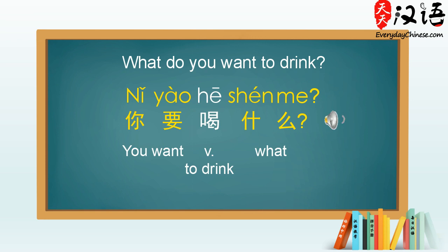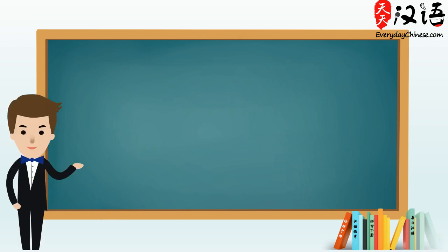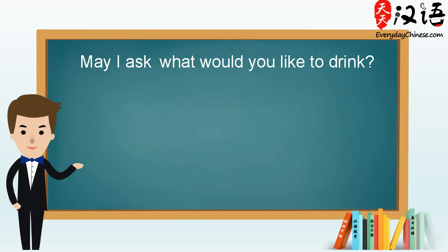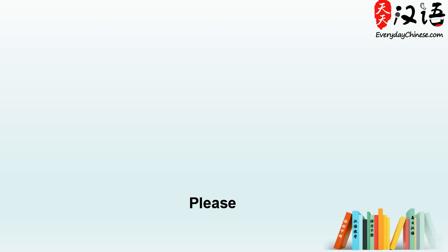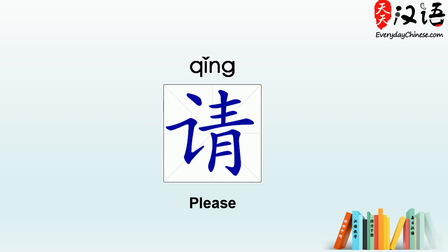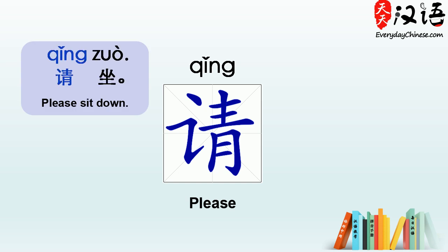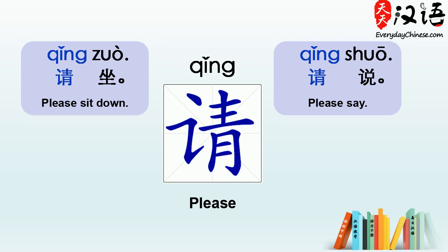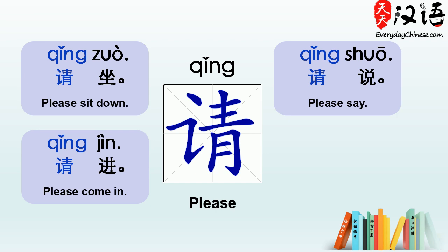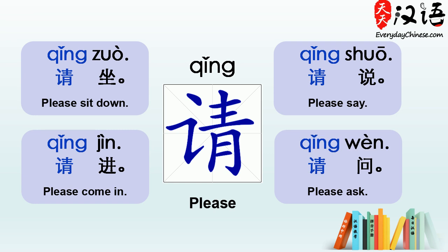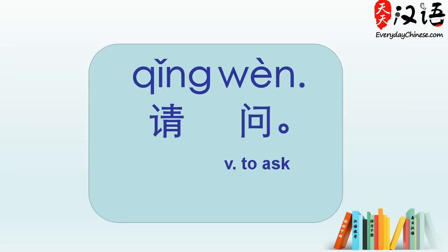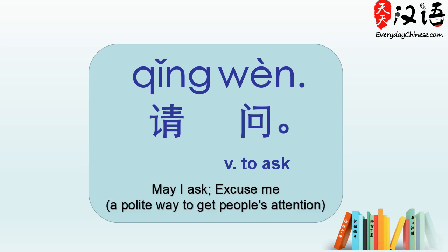你要喝什么? When you go to a cafe to order your drink, the waiter or waitress would be more polite by asking, may I ask, what would you like to drink? To say may I ask in Chinese, we literally say please ask. The Chinese word for please is 请. Like, please sit down: 请坐. Please say: 请说. Please come in: 请进. And please ask: 请问. The verb 问 means to ask. 请问 is similar to may I ask or excuse me in English, which is a polite way to get other people's attention.